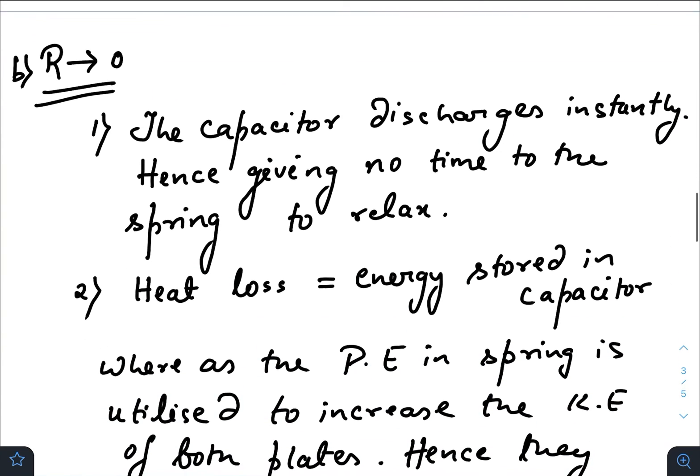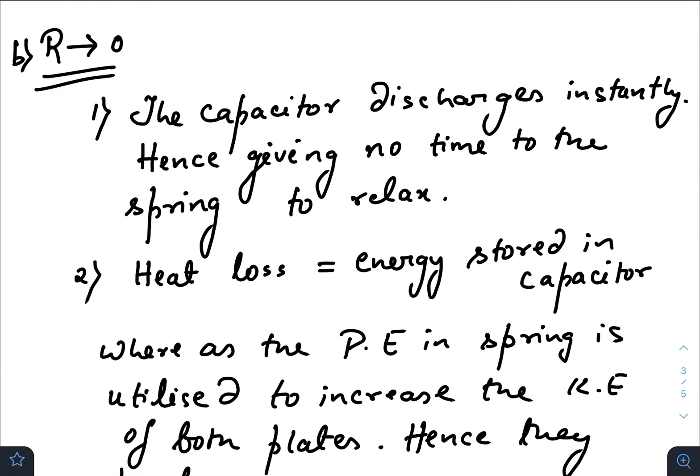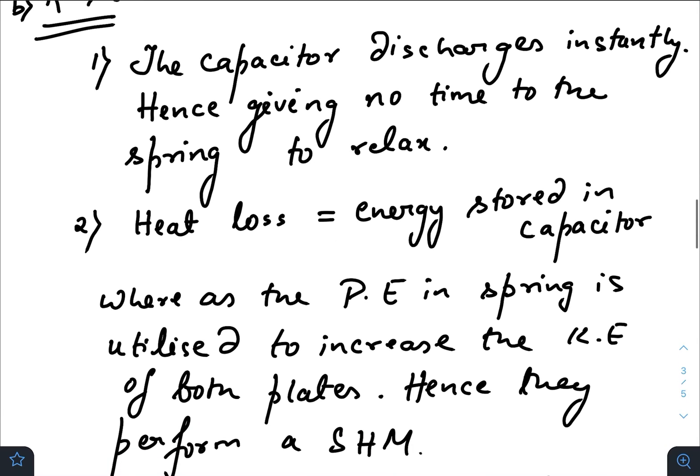In the second case, when R is very small, that is R tends to 0, just after turning on the switch, the capacitor discharges through the resistance due to very small time constant. It discharges instantly, hence giving no time to the spring to relax. That means when you turn on the switch, the length of the spring remains the same, that is D, and in a very small amount of time, the whole energy of the capacitor discharges through the resistance.